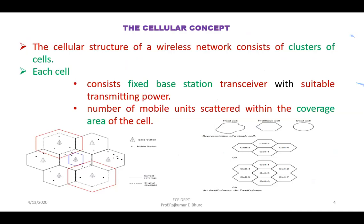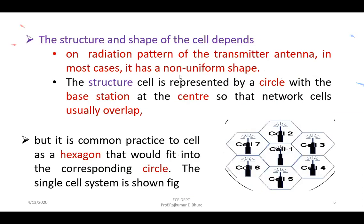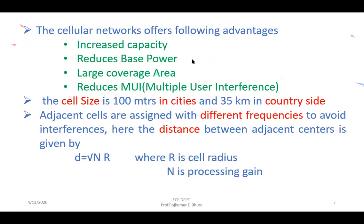The mobile unit also consists of a transceiver comprising a sensitive receiver and a low power transmitter, operating in a wireless environment characterized by multi-path propagation fading and access interference.